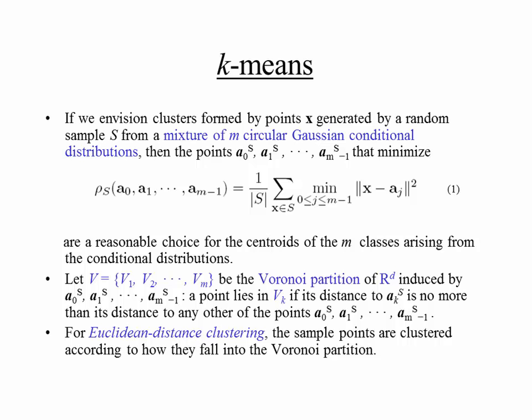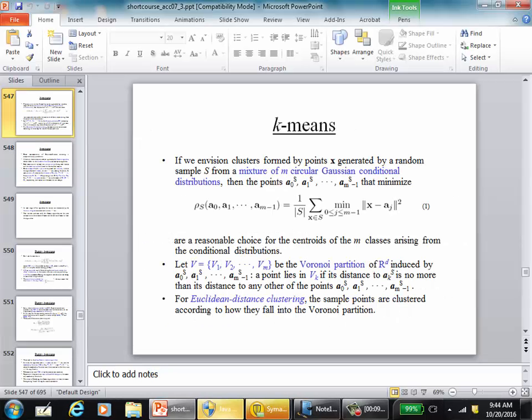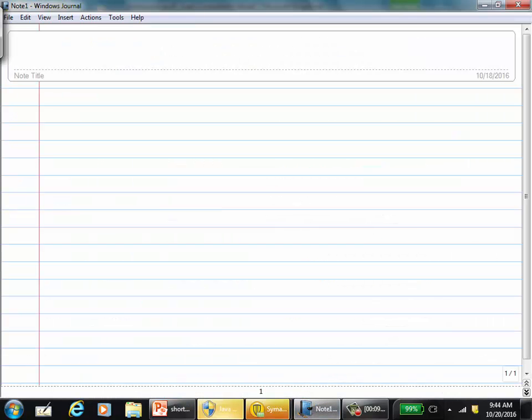The idea behind K-means is the following: you have M different classes, one through M, and for each class you choose a centroid — points A0, A1, up to A(M-1). This metric measures the distance of each point X from the centroid of each class. Let me draw a picture to illustrate. Say there are three classes C1, C2, and C3, and you pick a centroid for each.